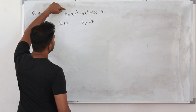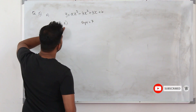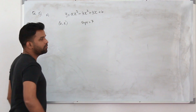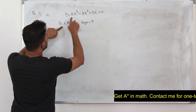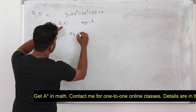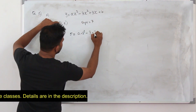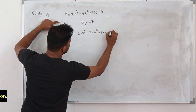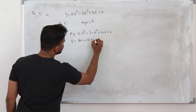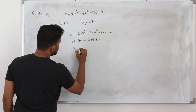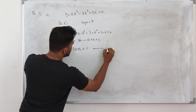We are given a cubic function, the point (2, 5) is on the curve, and the gradient at that point is 7. We need to use all this information to find a and b. Using the first condition — this point lies on the curve — replace x by 2 and y by 5: 5 equals 8a minus 12 plus 6 plus b, giving us 8a plus b equals 11. Let's call this equation 1.